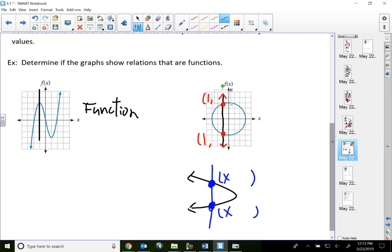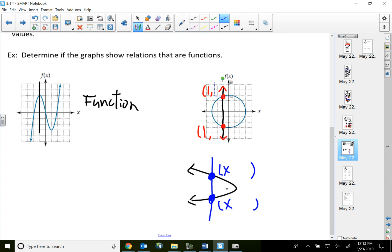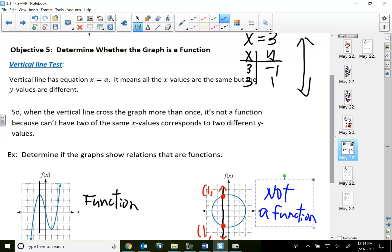So remember, the relation cannot have the same x value to be a function. So this circle is not a function. Vertical line test - the characteristic of a vertical line is all the x values are the same. That's why we use that to help us test whether the graph is a function or not a function. That will conclude this video. Thank you for watching.